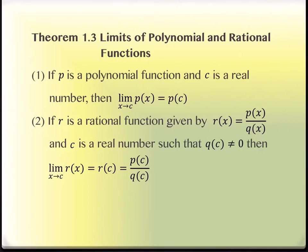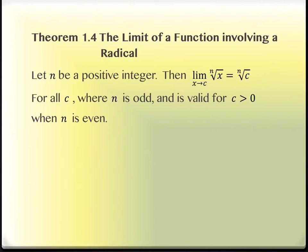If r is a rational function that can be written as p of x over q of x — where p and q are polynomials — c is a real number, and q of c is not zero, then the limit as x approaches c of r of x is evaluated at x equal to c, meaning you evaluate p of x and q of x each at x equal to c. We also have a rule for radicals: the limit of a radical expression equals the nth root of c, with the condition that if the index n is even, like a square root, c must be positive since you cannot have a negative under an even radical.